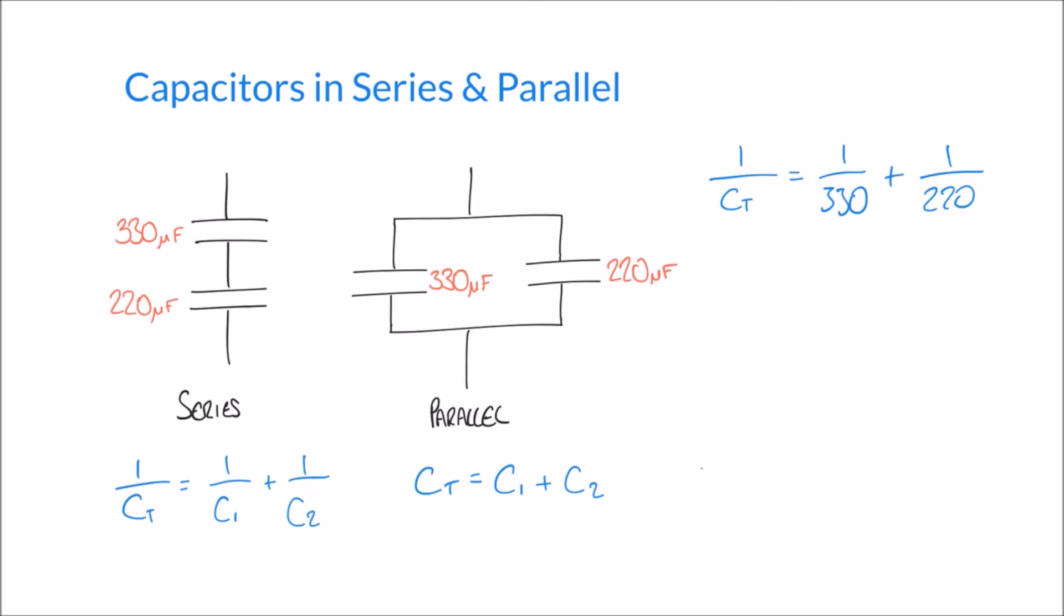So when I calculate that, I get an answer of 0.0075 recurring. Now remember, that's not our final answer, because what we've worked out here is 1 over the total capacitance.